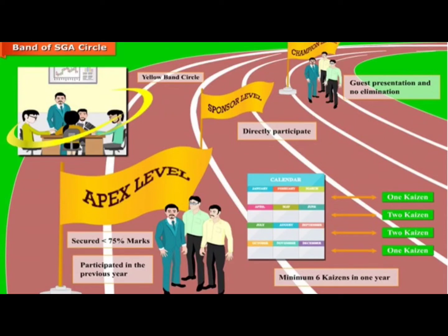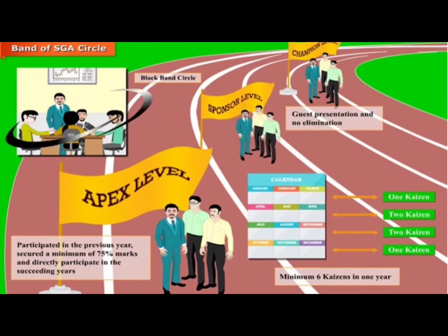SGA circles that participated in the previous year's apex level competition and secured a minimum of 75% marks are called black band circles. These circles can participate directly at the apex level competition for the succeeding year, subjected to completing a minimum of one Kaizen every quarter and a minimum of six Kaizens in the year. Black band circles must make guest presentations at the champion and sponsor levels for sharing best practices; however, their performance will not lead to elimination at those levels.